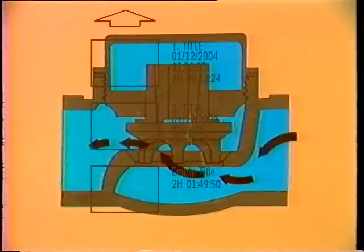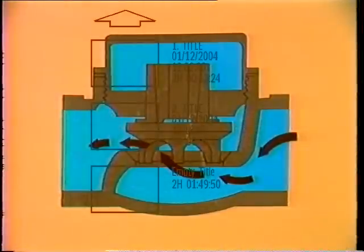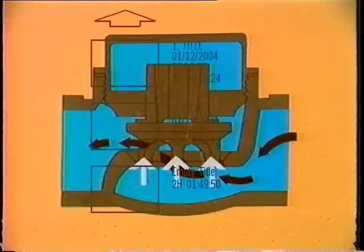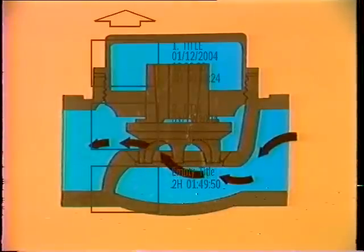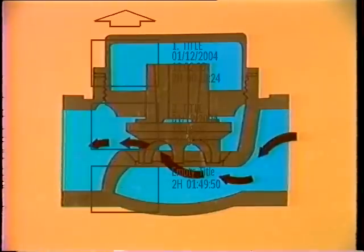The disc on a lift check valve is not pivoted by an arm — it is lifted when system pressure is greater than the weight of the disc, which permits flow through the valve. Guides attached to the disc keep it in position and prevent the disc from cocking or jamming against the seat. Lift check valves are well suited for service in systems with a fluctuating flow such as steam, air, or gases. The slamming does not affect them as it does the swing checks.